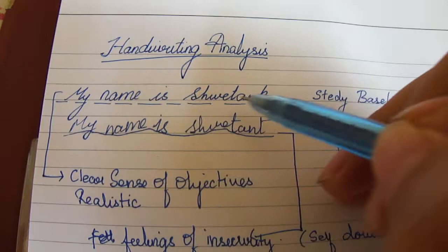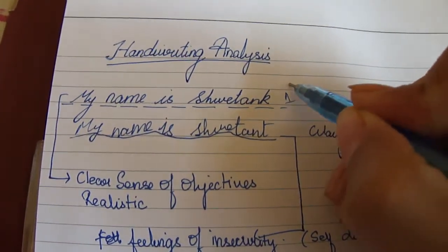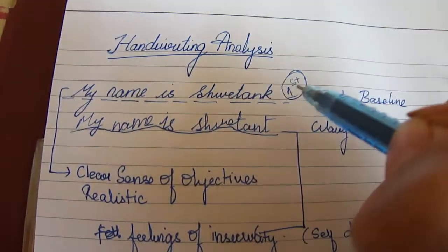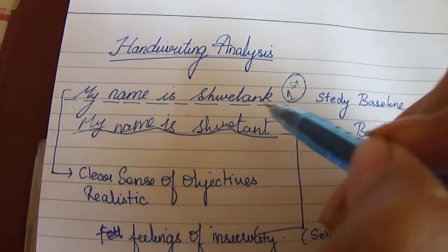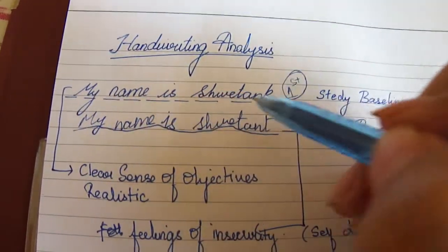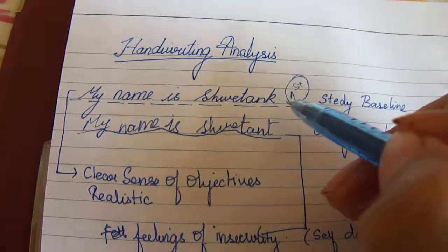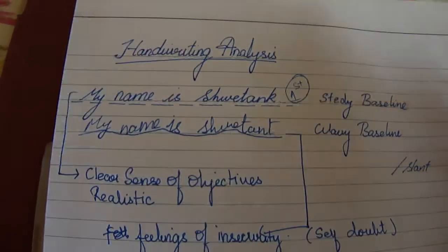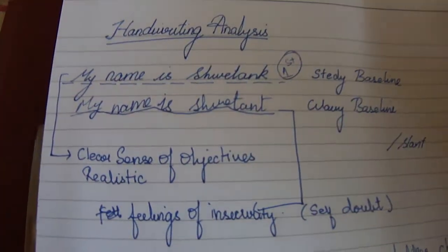You can see in this first case, it is following a very ordered baseline. It is consistently written on the same line. If you draw a straight line, it would be almost straight. This handwriting sample has a more steady baseline.